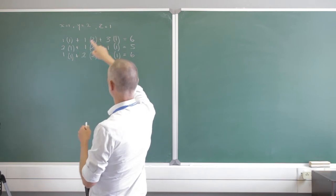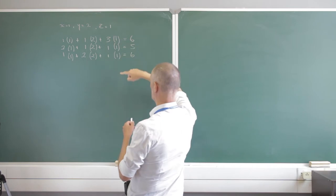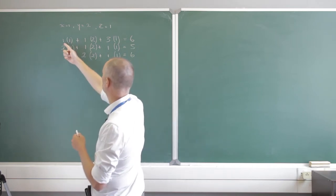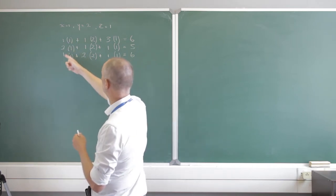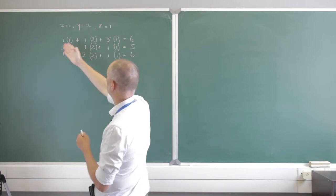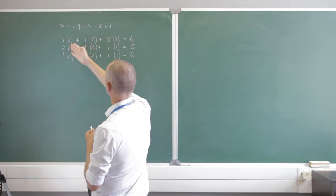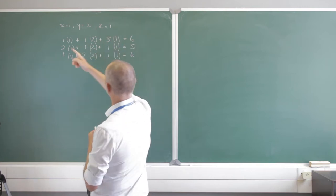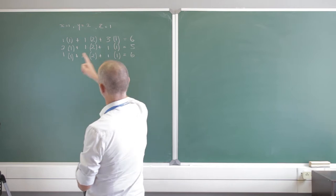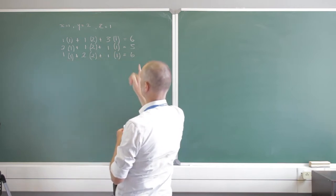There are my x values: 1, 1, 1. My y values: 2, 2, 2. My z values: 1, 1, 1. And I've just put arbitrary constants in front of them — a 1, a 2, and a 1; a 1, a 1, a 2; a 3, and a 1. So 1 times 1 is 1, 1 times 2 is 2, 3 times 1 is 3. 1 plus 2 plus 3 is 6. 2 plus 2 plus 1 is 5. 1 plus 4 plus 1 is 6.